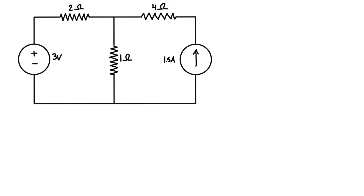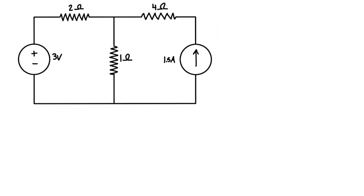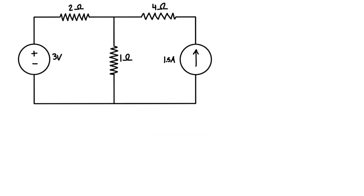When doing mesh analysis you have to identify each mesh, and each mesh is basically each loop going around in the circuit without incorporating other loops inside. For example, starting here we have one loop that goes back to this point, and another loop over here that we can go around and get back to the same starting point. We're going to apply Kirchhoff's voltage law around each of those loops, and we draw what we call a mesh current flowing around each loop.